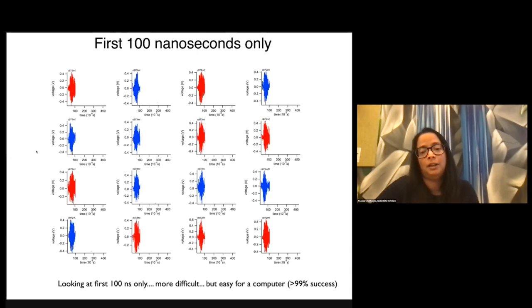However, a computer can still, a neural network actually, can still distinguish this with about 99% success. And I think this is great. This was really a big improvement for us. And it's only one of these ways in which computer vision is we are applying it to quantum devices.